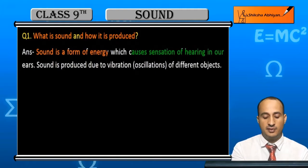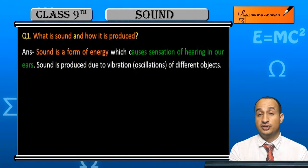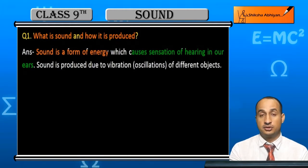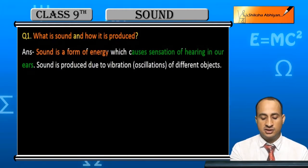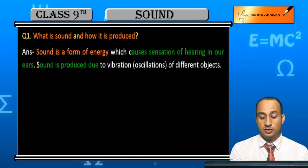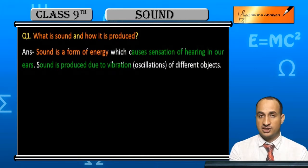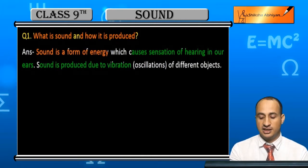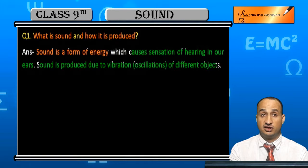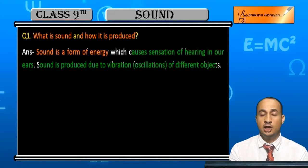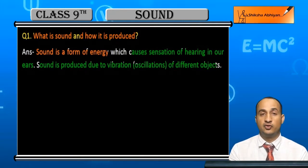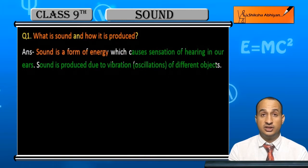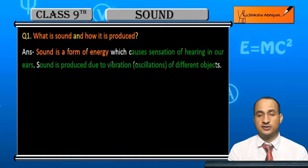Hamare kaan mein sensation of hearing produce hoti hai — sunne ki sensation. Sound is produced due to vibration, yani oscillation se. Different objects vibrate, aur unka oscillation sound produce karta hai. So yeh tha production of sound.